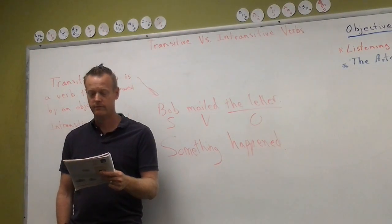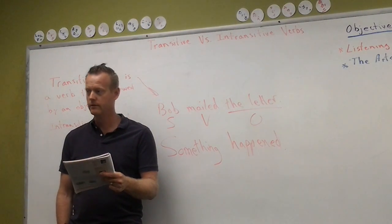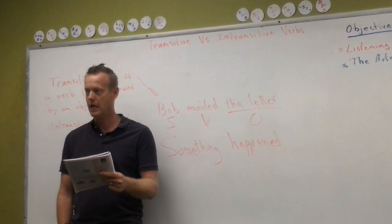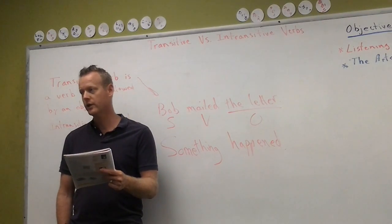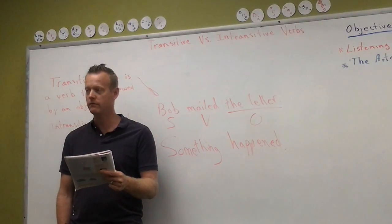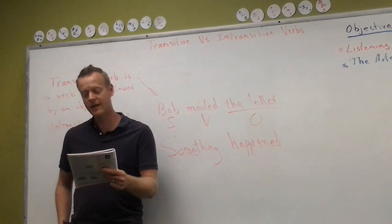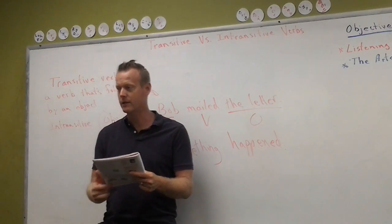Now read F: 'The verb died.' What is it — intransitive or transitive? Intransitive. It's intransitive. It doesn't have an object.